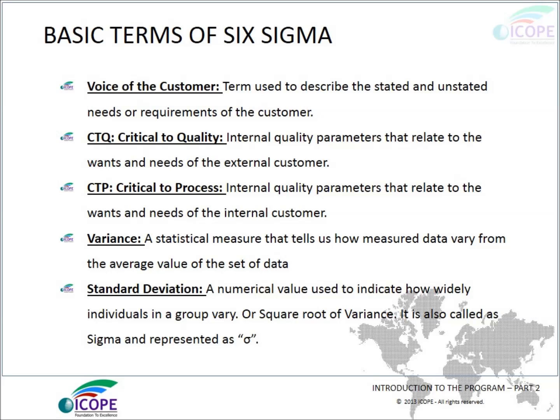CTQ — Critical to Quality: internal quality parameters that relate to the wants and needs of external customers. CTP — Critical to Process: internal quality parameters that relate to the wants and needs of external customers. Variance: a statistical measure that tells how far data is spread from the average value.